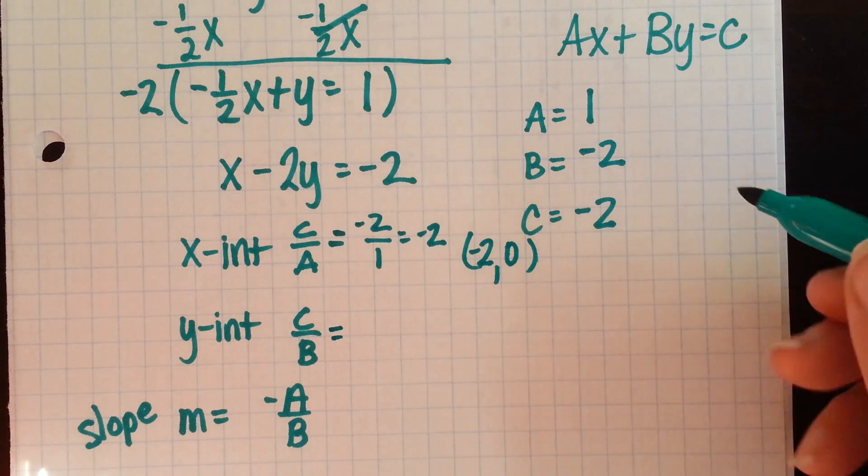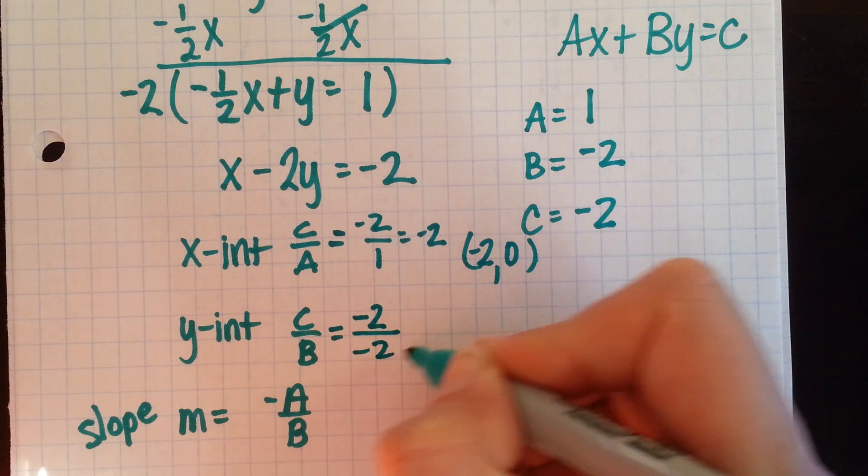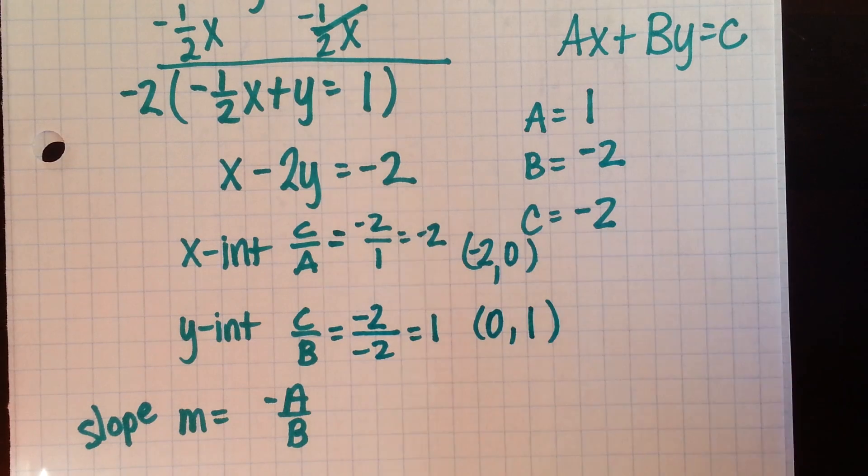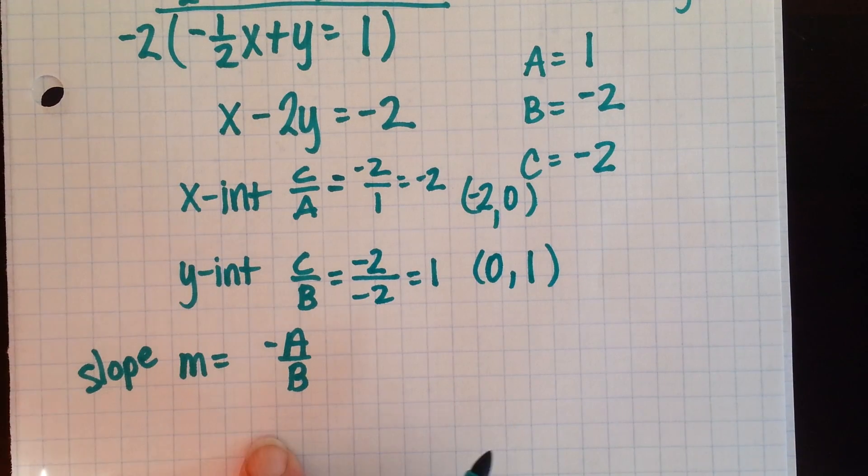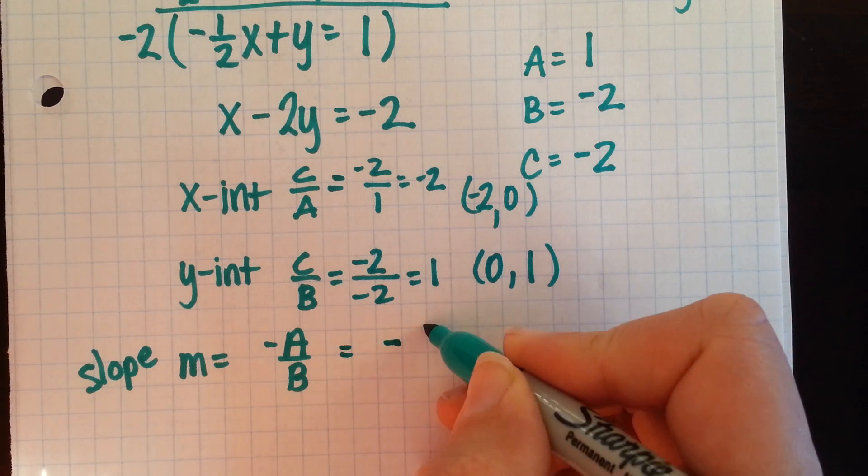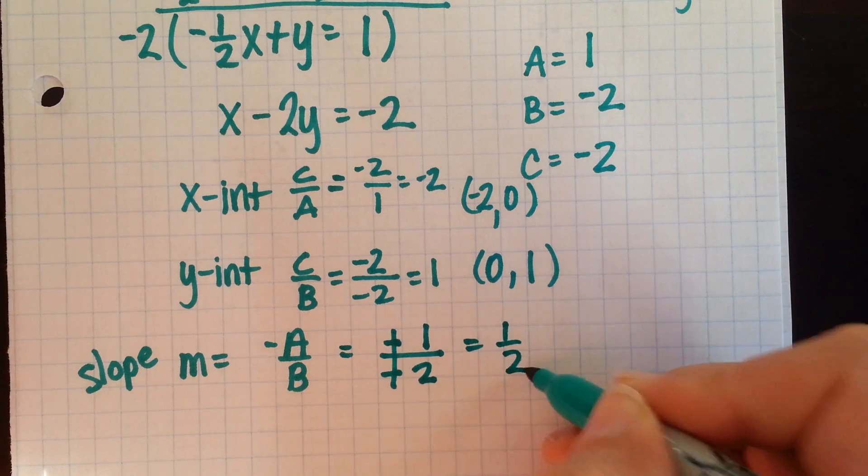Our y-intercept, c over b, we have negative 2 over negative 2, which reduces to 1. y-intercepts have an x of 0 and a y of 1. For our slope, negative a over b, we would have negative 1 over negative 2, which is a slope of 1 half.